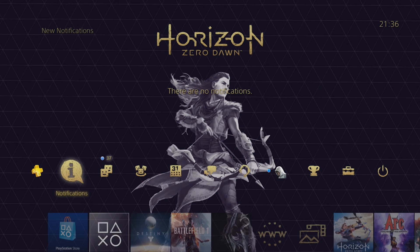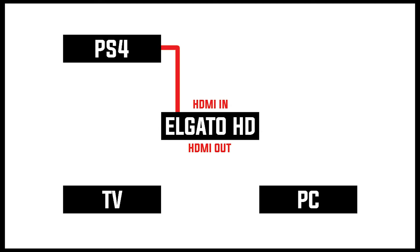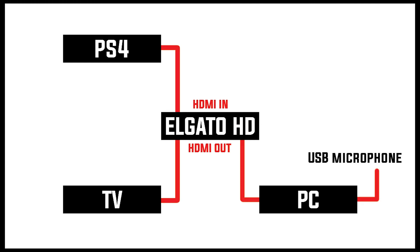Now that we have everything we need, we can go over to the final part of this tutorial where we put everything into place. First off, we are going to connect our HDMI cable that was included with your Elgato HD, and we are going to connect it to your PlayStation 4 and your HDMI in port of your Elgato HD. Next up, we are going to take our HDMI cable that was already in our TV and connect it to our HDMI out port of our Elgato HD. The third cable is the USB cable that was included with your Elgato HD — plug it into the HDMI outside of your Elgato HD, and then the other side connects to your PC. And don't forget to plug in your USB microphone into your computer.